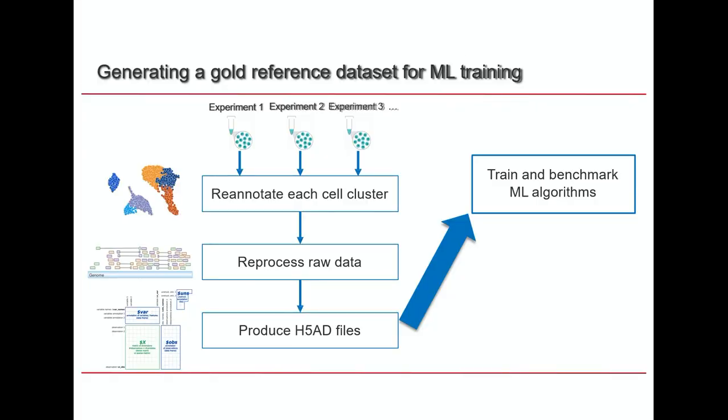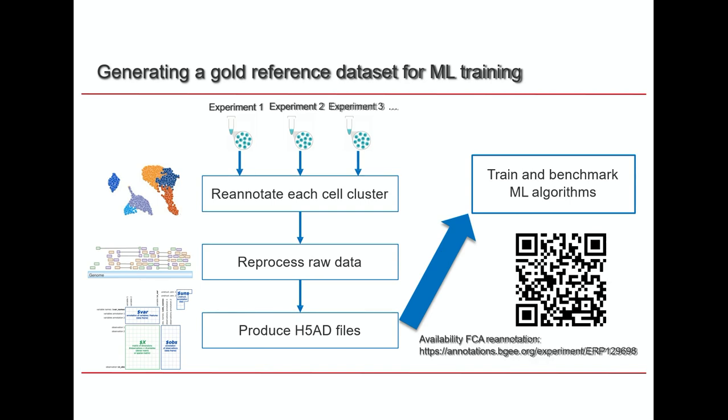In conclusion, we used different experiments, re-annotated each cell cluster, reprocessed the raw data, and produced H5AD files for each of these experiments, and we train and benchmark the ML algorithms on it. These curated experiments produced by BG are available to everyone. The Fly Cell Atlas one is also available through this QR code.